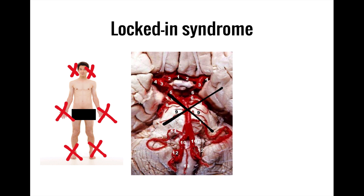However, because cortical functions remain intact, the person is usually completely aware of their situation. Depending on the extent of the damage, higher cranial nerves may be spared, so someone with this condition may be taught to communicate using eye movements and blinks. Overall, locked-in syndrome is a devastating reminder not only of the differences between cortical and subcortical functions, but also of just how important the brainstem is for our ability to function.